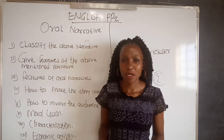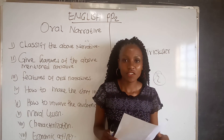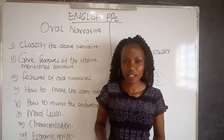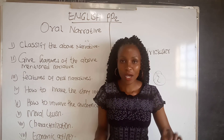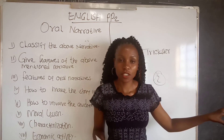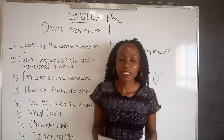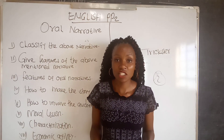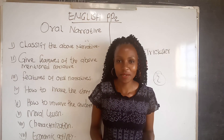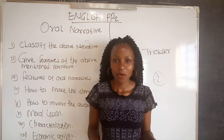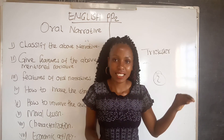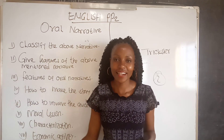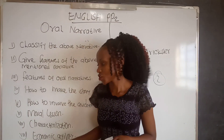For characterization, you can be asked to give the character traits of the hare, the hyena, or any character in the narrative. You are supposed to identify the trait and support it from the narrative. For example: 'the hyena is foolish because it is tricked by a small animal, the hare,' or 'the hare is cunning because it was able to trick the hyena.'